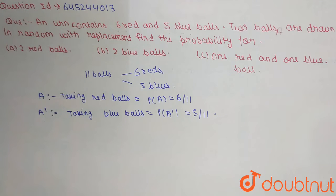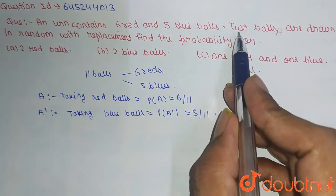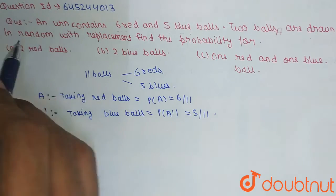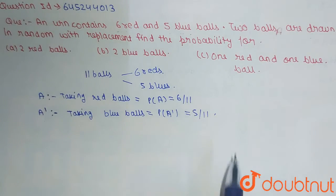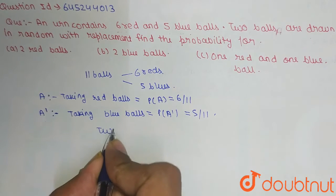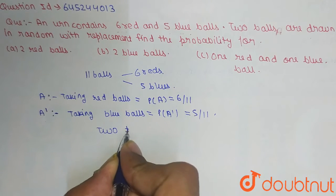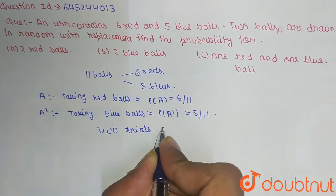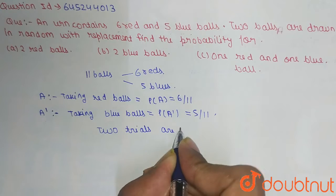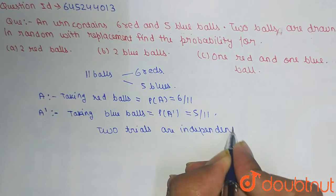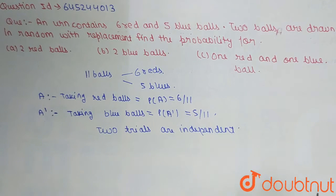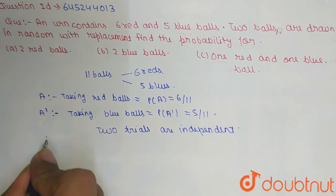We have been clearly given that two balls are drawn at random with replacement, so from here we can say that the two trials are independent.